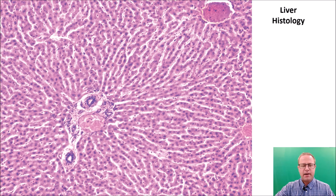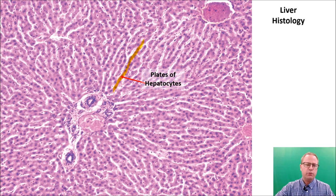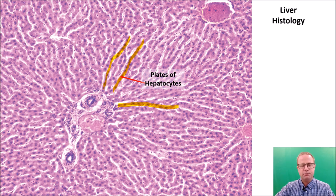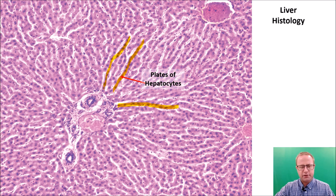At higher magnification — around 400x — you can see plates of hepatocytes. The liver is made up of hepatocytes (remember, 'hepa' refers to the liver, as in hepatitis meaning liver inflammation). The hepatocytes manufacture bile for emulsification of lipids, help to biotransform carbohydrates into fats and vice versa, and help to deaminate and detoxify proteins as they are digested and metabolized. The liver is a very important organ.